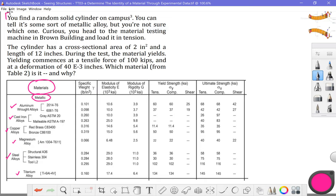We find a random cylinder on campus. We know it's some sort of metallic alloy, but we're just not sure which one. Curious, we head to a material testing machine and load it in tension.